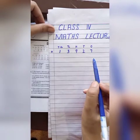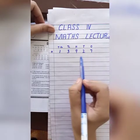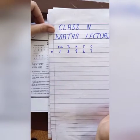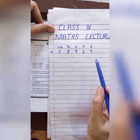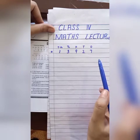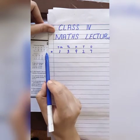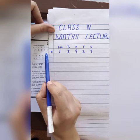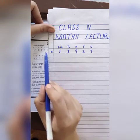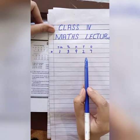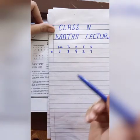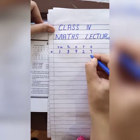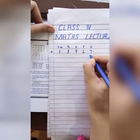If the place value numbering is wrong, the addition will be wrong even if we added correctly. Look at here — five is at the place of ones. I have to write it at the ones place only. If I write it at the tens place, the addition will be wrong. So we will start from the ones place.